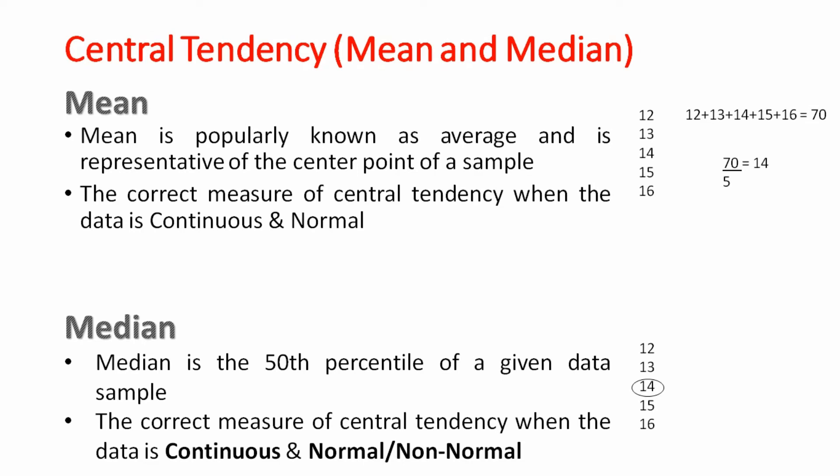In the data set, you need to arrange your data into ascending or descending order. In this data set, we have arranged our data into ascending order. And 14 is the central point. When your data is odd, it is easy to find out the central value. When data is even like this: 12, 13, 14, 15, 16, 17. You need to arrange your data into ascending order. And then calculate the average of these two points, which is 14 and 15. And that would become your median. So in second data set, 14.5 is the median.